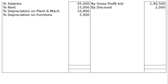Then depreciation on furniture. Depreciation on plant and machinery is 15 percent and on furniture is 10 percent. Furniture is rupees 50,000, so 10 percent of that is rupees 5,000.